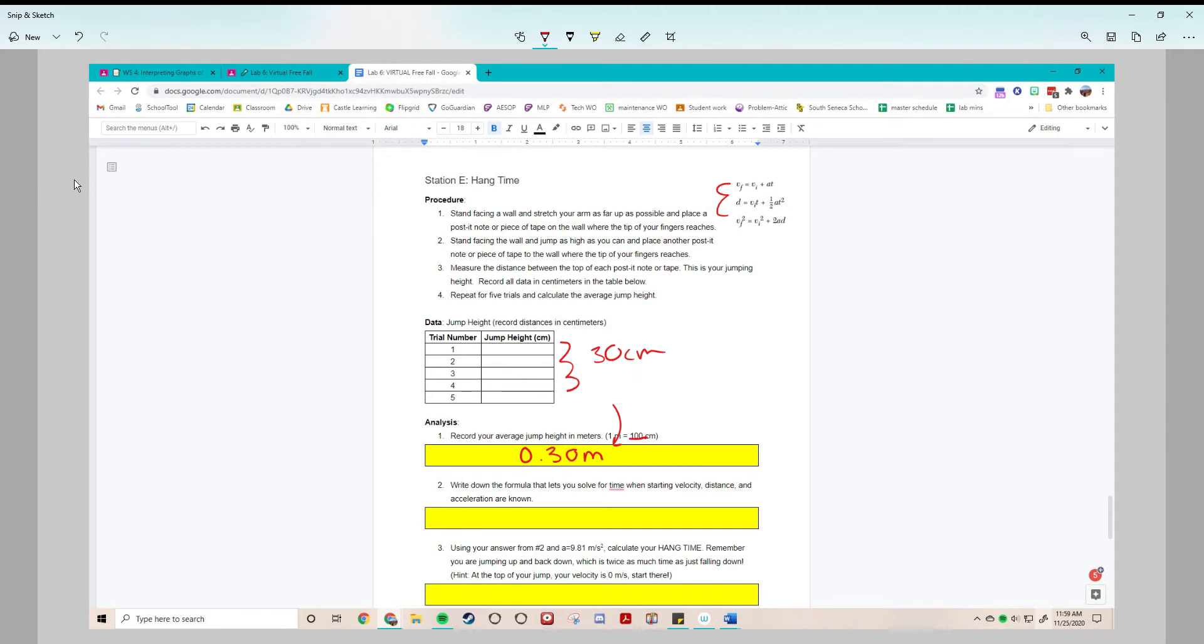Now for the formula that lets you solve for time when you know starting velocity, distance, and acceleration. Let's see. This one doesn't have distance. This one has final velocity which we don't know, so we want this one.